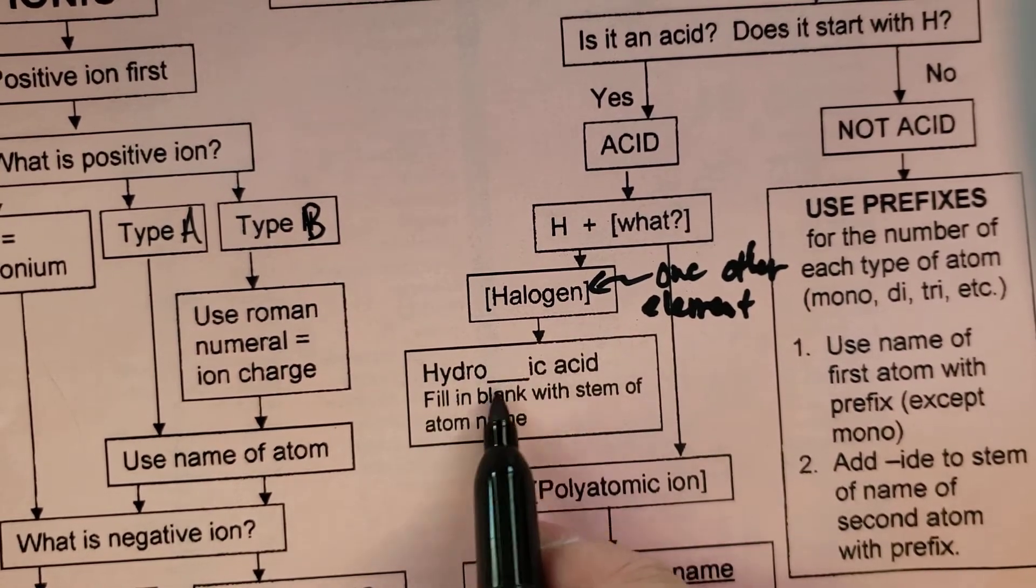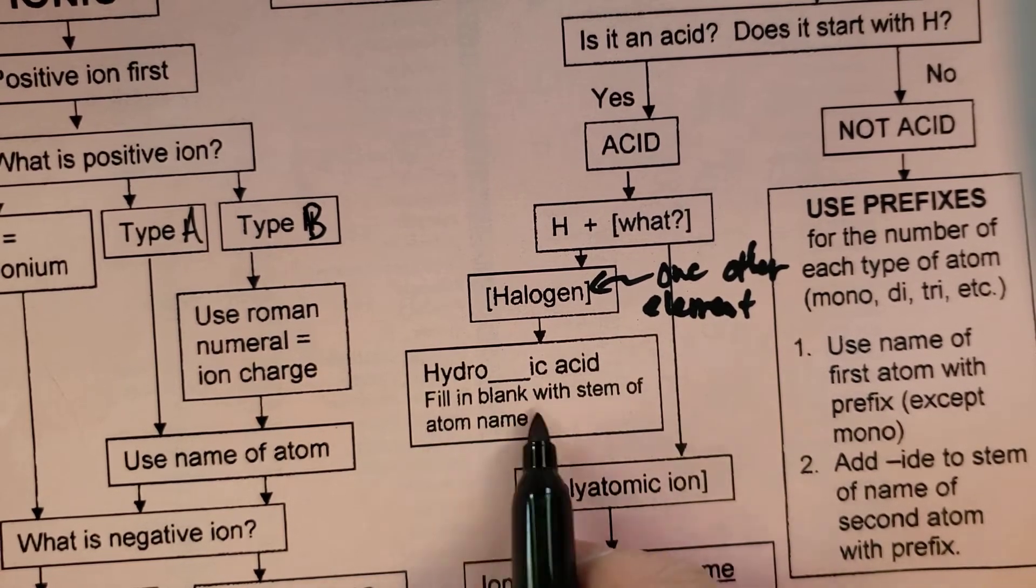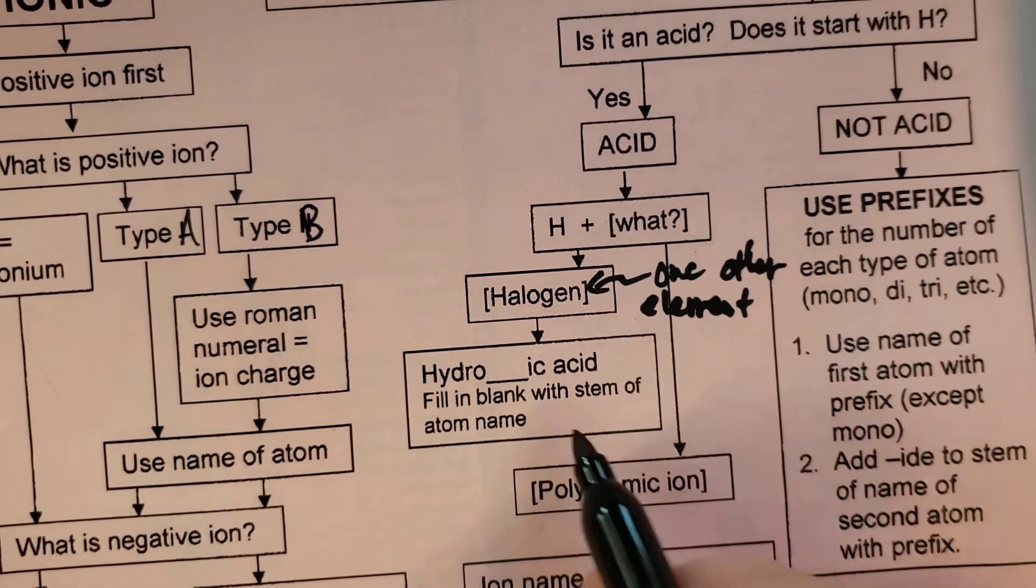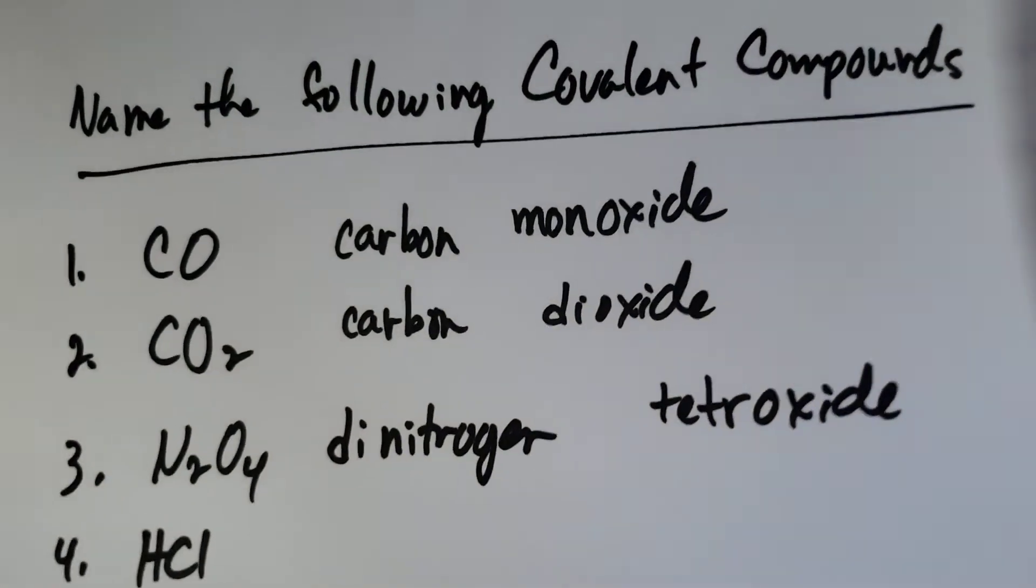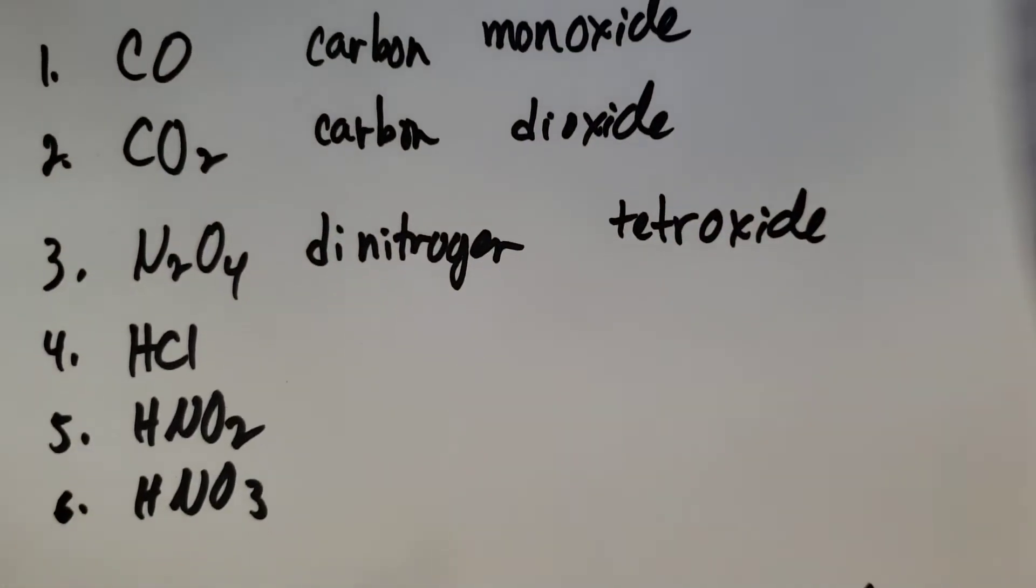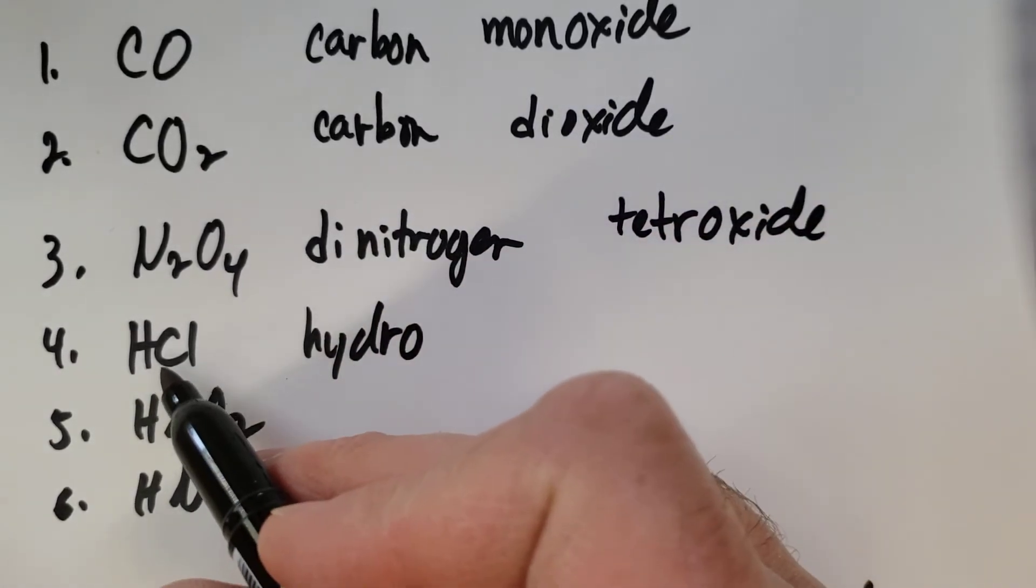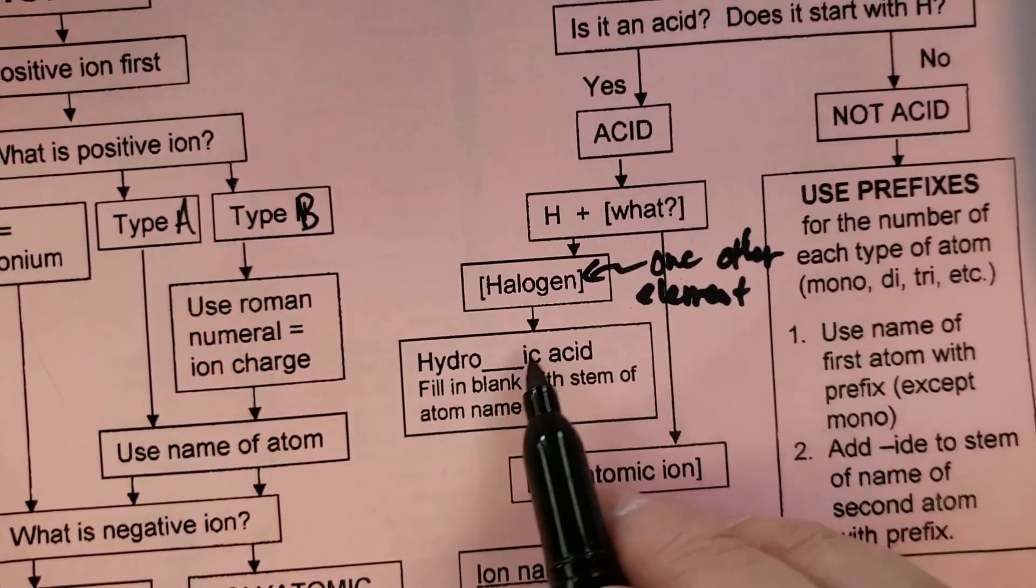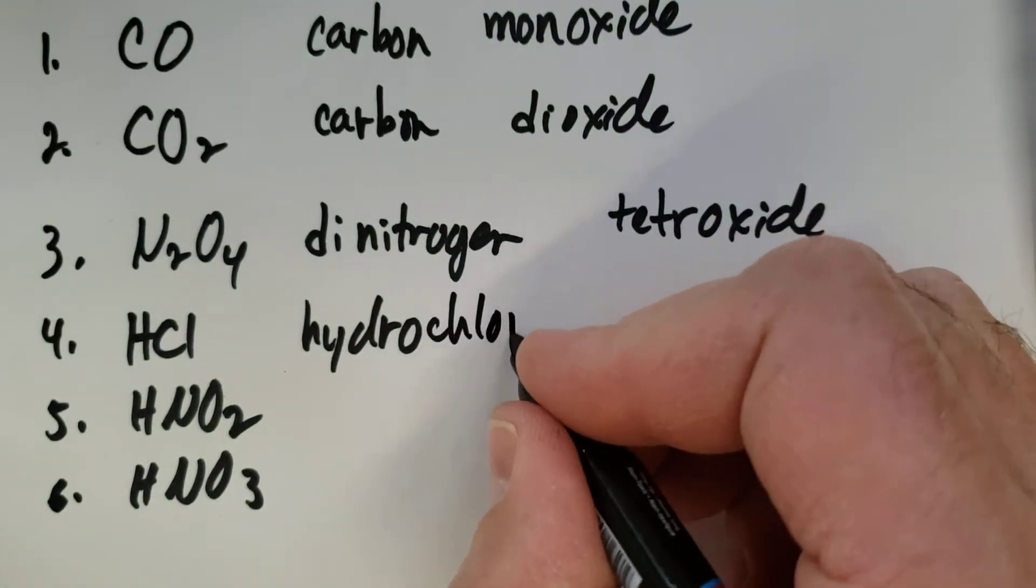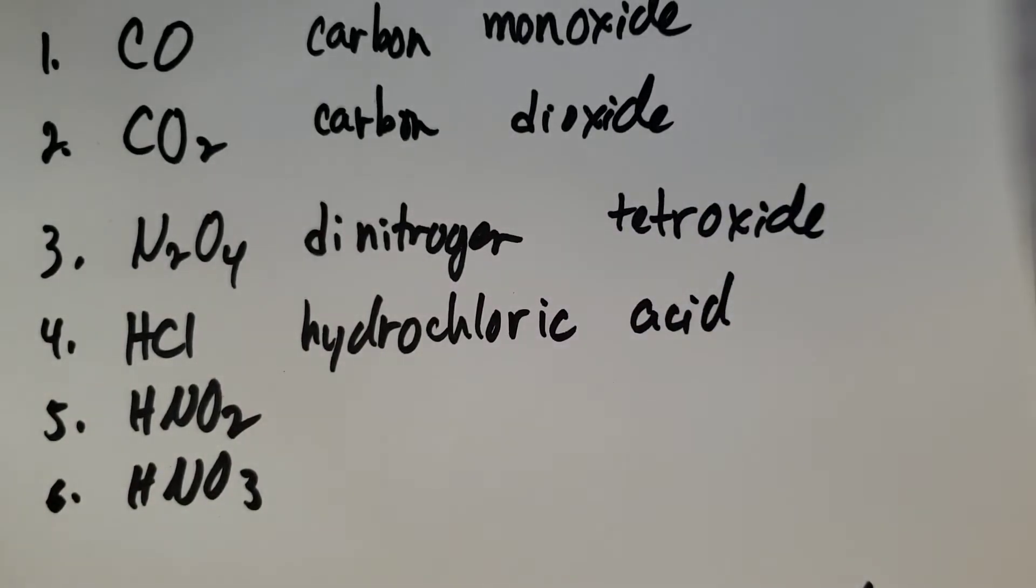Then the format goes like this. Hydro, whatever that element's identity is, and then IC acid. So fill in the blank with the stem. And I have an example of that right here. I have H and Cl. Cl is a halogen. So it's H and one other element. So I do include hydro. Now that is the chloride ion. So chloride becomes chloric. Hydro chlor, not I, but chloric. And then you simply add the word acid.